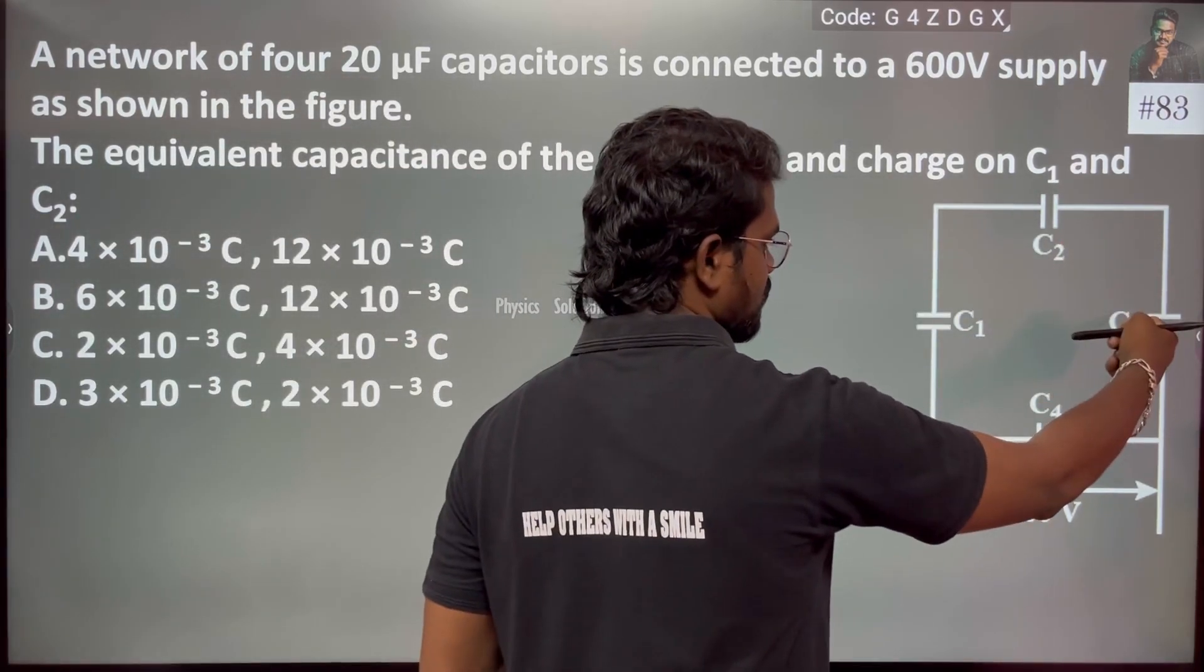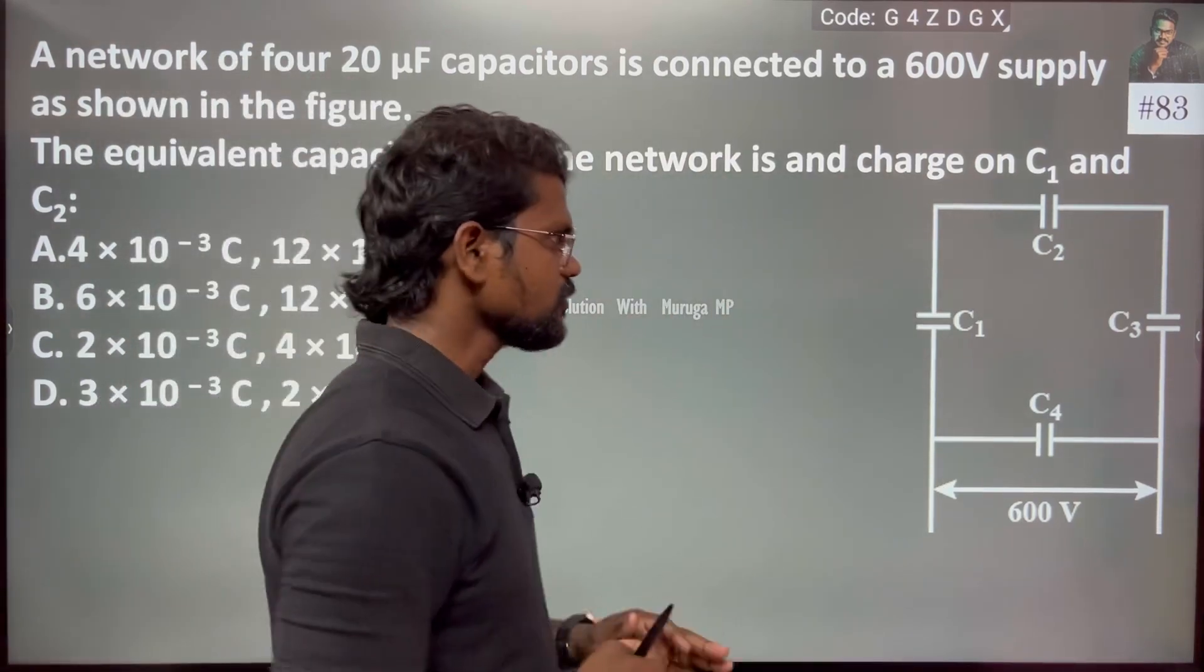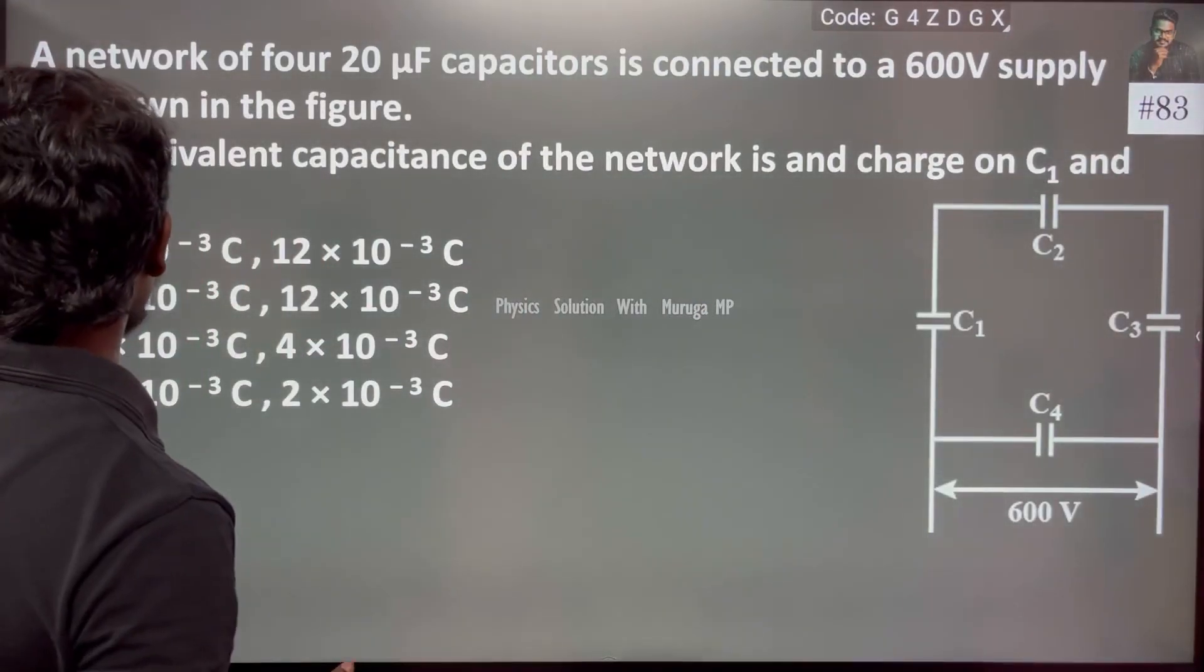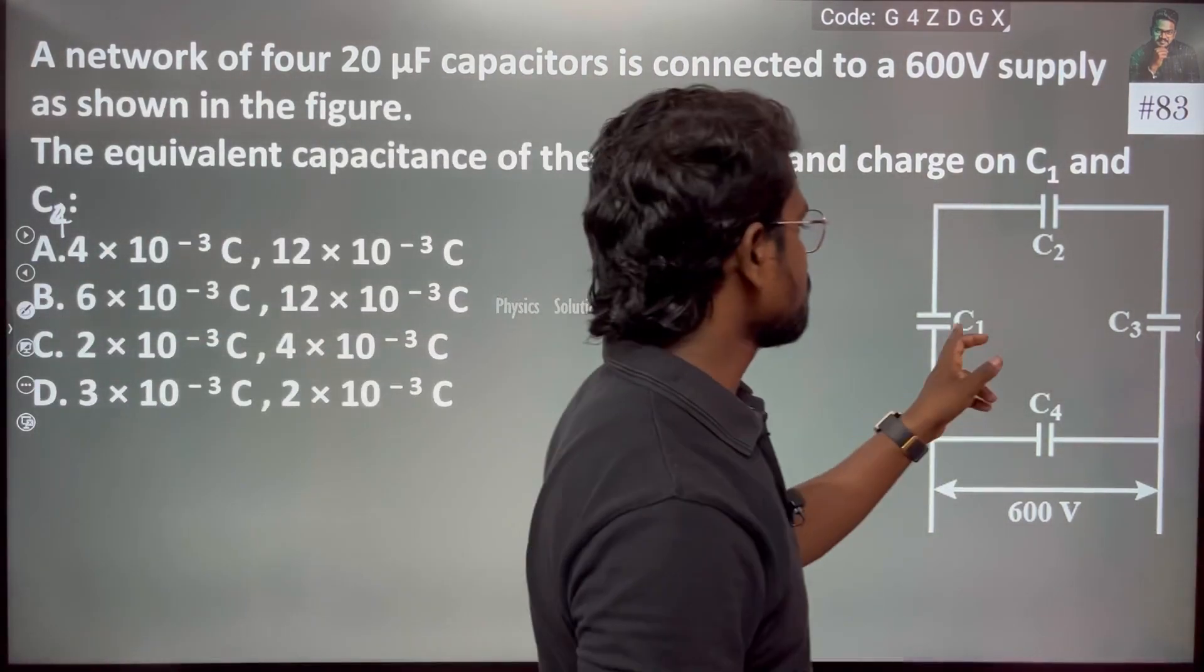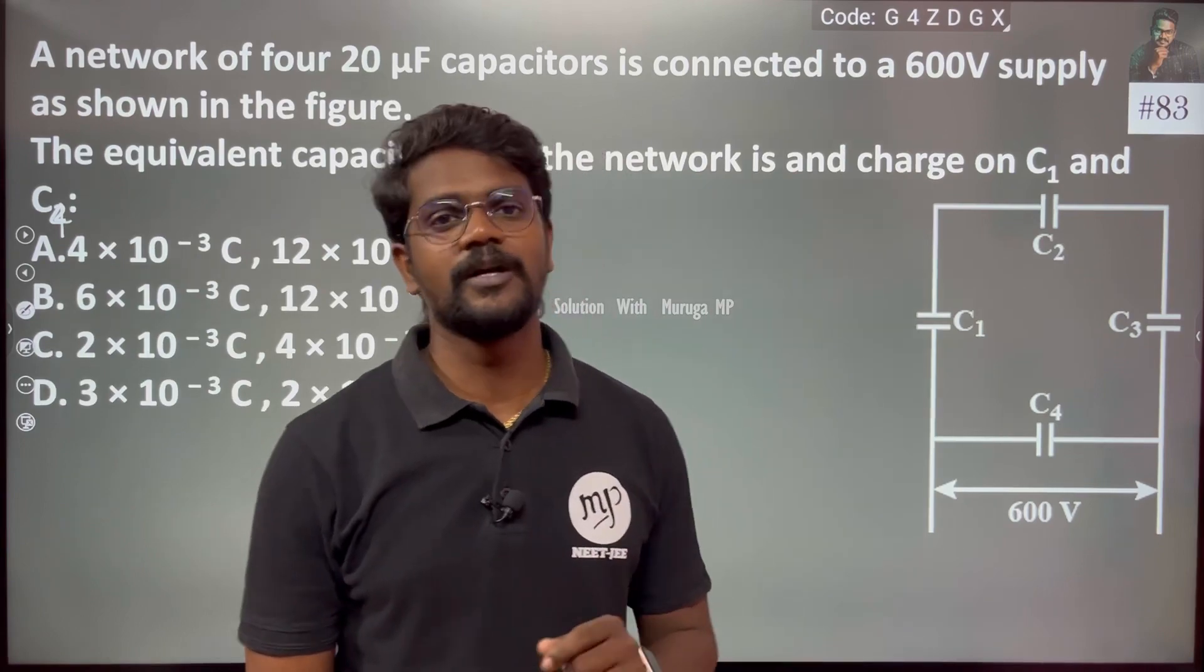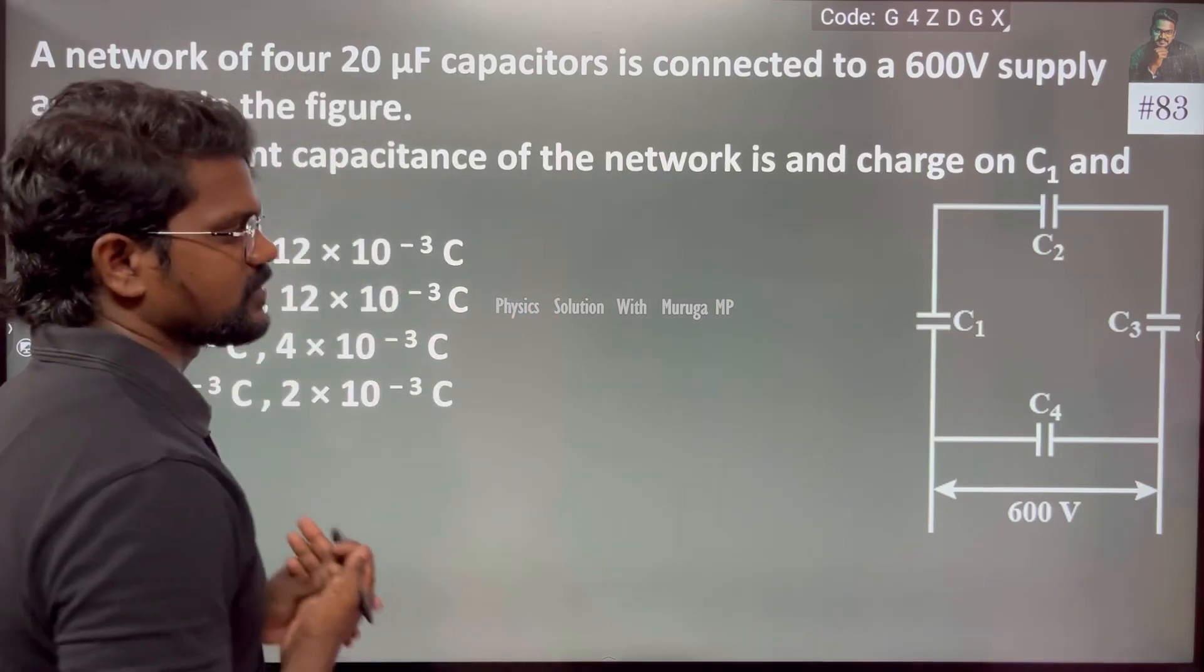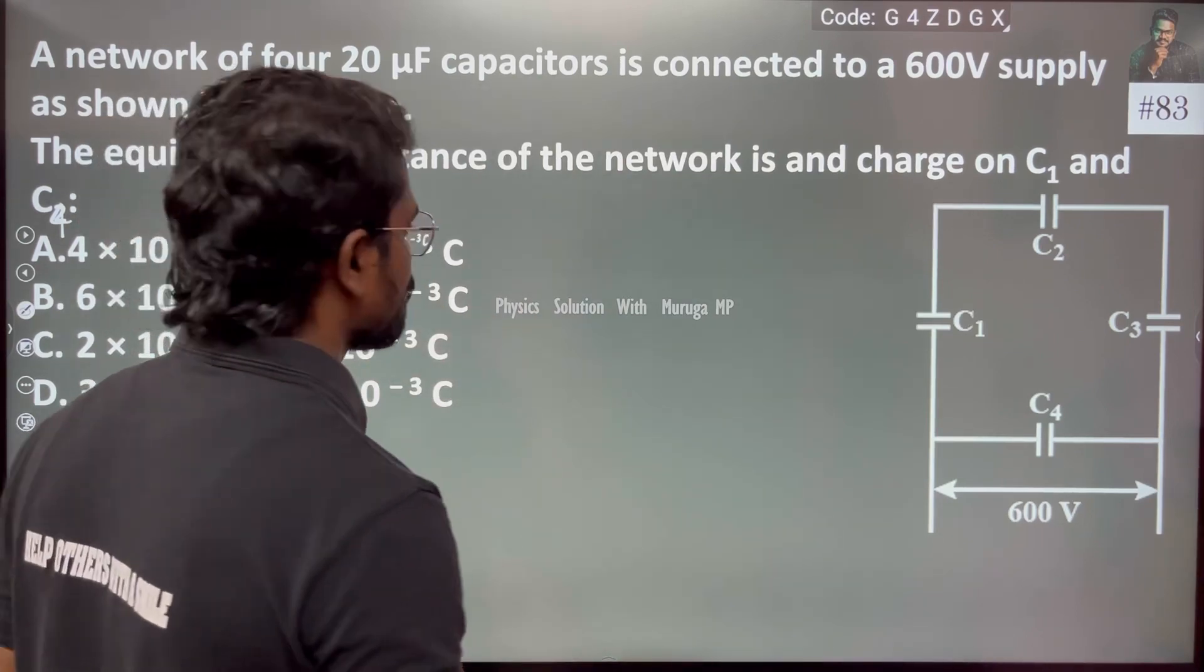What is the charge on C1 and C4? This is C4, okay. We need to find the charge on C1 and C4. For C2 and C3, since they are in series with one capacitor, the charge remains the same. First, we will find the effective capacitance.